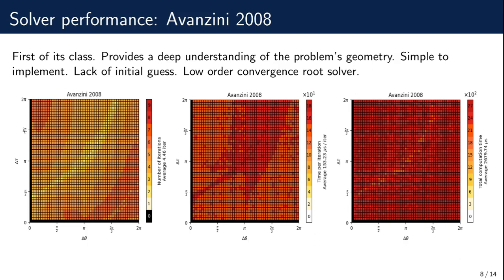The algorithm proposed by Avanzini requires a number of iterations between 4 and 5. Regarding computation times, those are high compared to the rest of the solvers. This is a combination of the root finder used by the algorithm and the lack of a procedure for generating the initial guess. A regular false position method is used because the derivative of Kepler's equation with respect to the free parameter was not provided in the original report. Nevertheless, this algorithm truly reveals the geometry of the problem by providing a new perspective using the eccentricity vector.